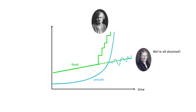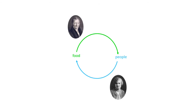And then we've got Boserup on the other hand saying we're not doomed. She comes from the 20th century where they have a much more positive view of our ability to invent our way out of our problems. So it's really a debate about limits. We've got Malthus saying that food limits people and that means the inevitable lot for humans is endless suffering. And then we've got Boserup saying necessity is the mother of invention and innovation will always save us. So it's people's imagination that limits food. And the question is, whose side are you on?